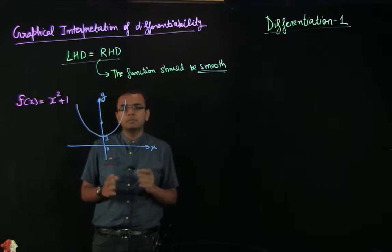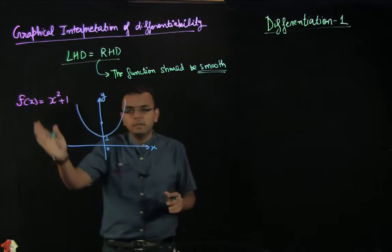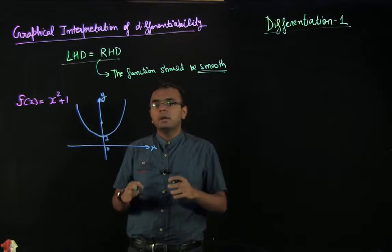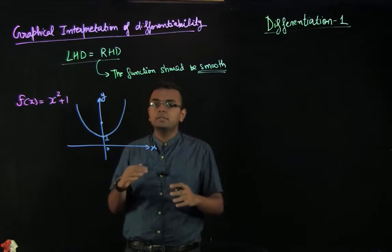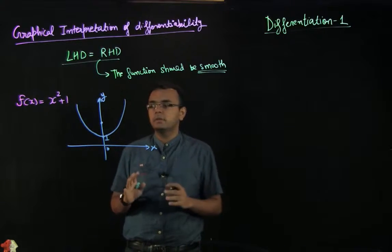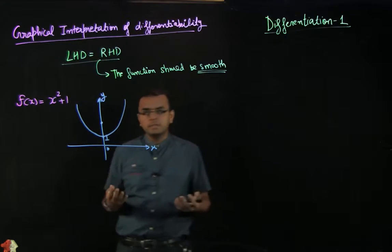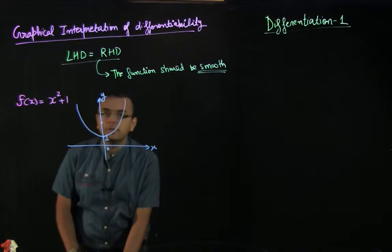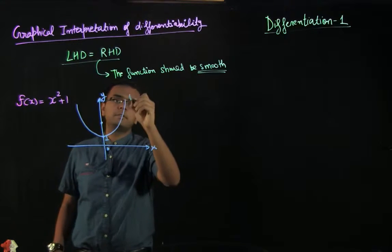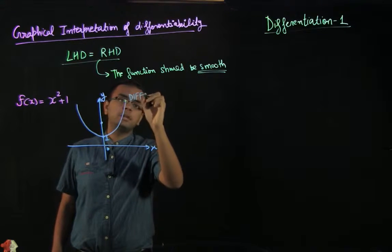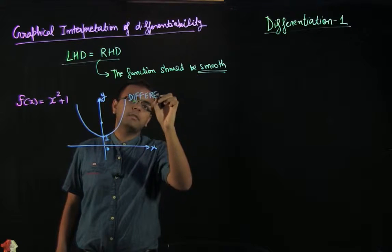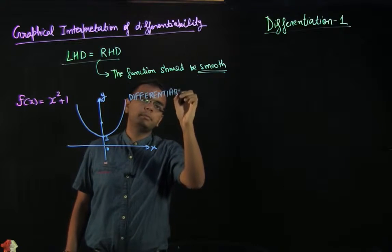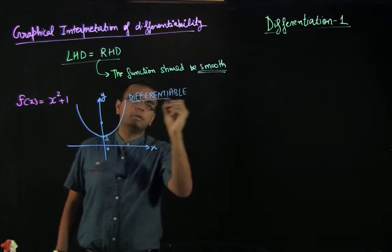This function is smooth in the sense that there is a nice curvature and it does not have any breaks or corners in the curve. So this function is smooth and hence it is differentiable. Visually, you should start appreciating what we mean by a smooth, differentiable function.